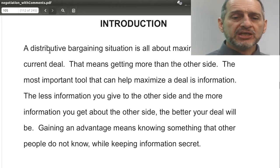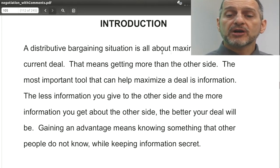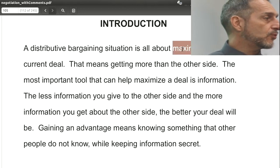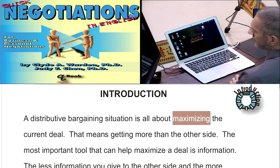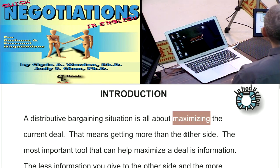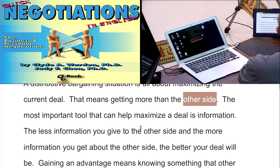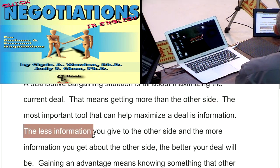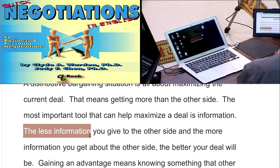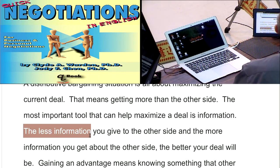A distributive bargaining situation is all about maximizing, about winning — making the best you can out of the situation. This means you're going to beat the other side; you're going to get more than what they get. A key, fundamental tactic: do not share your secret information. If you let the other side know your resistance point, they're going to push you right to it. You want to stay far away from your resistance point, so keep your information secret.